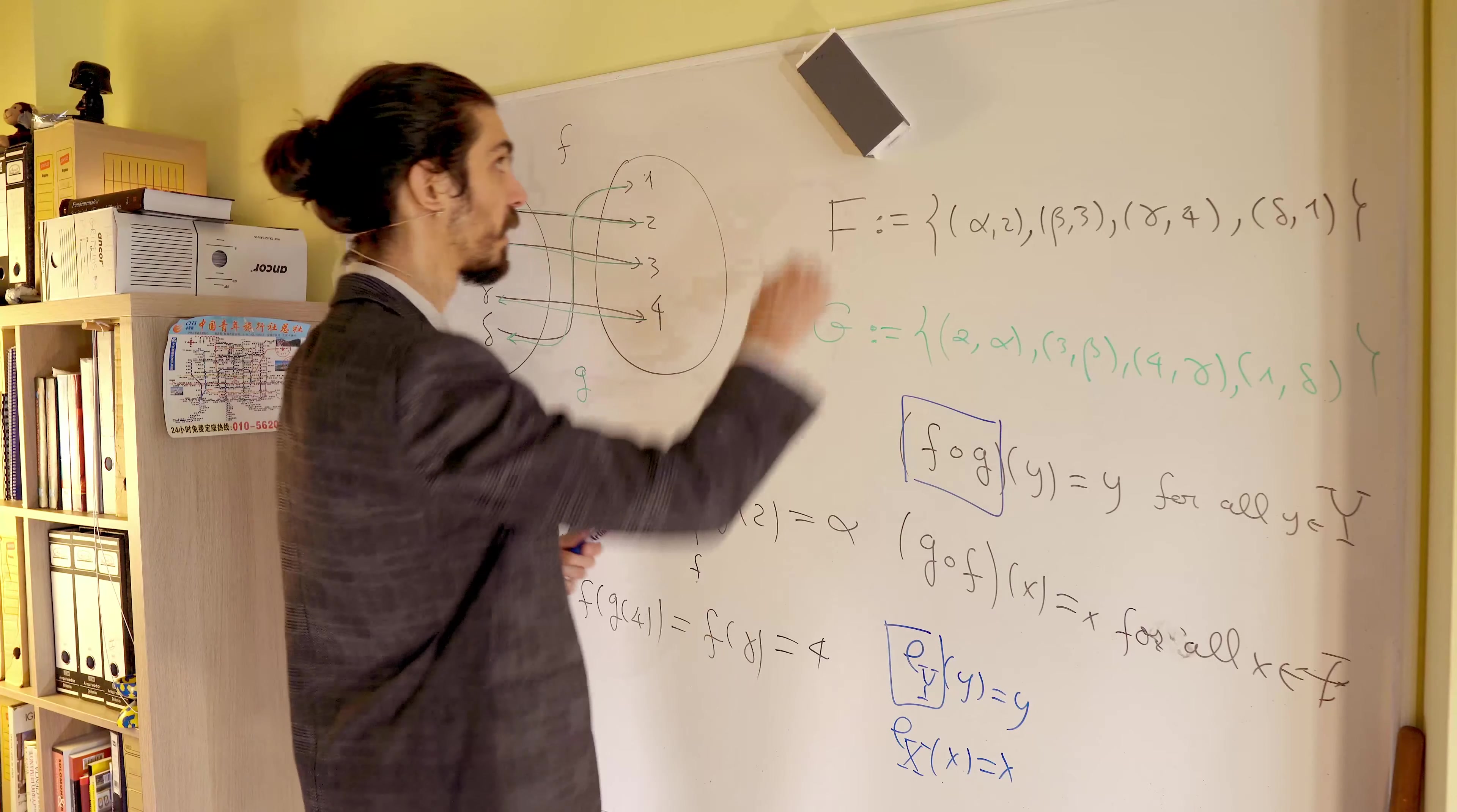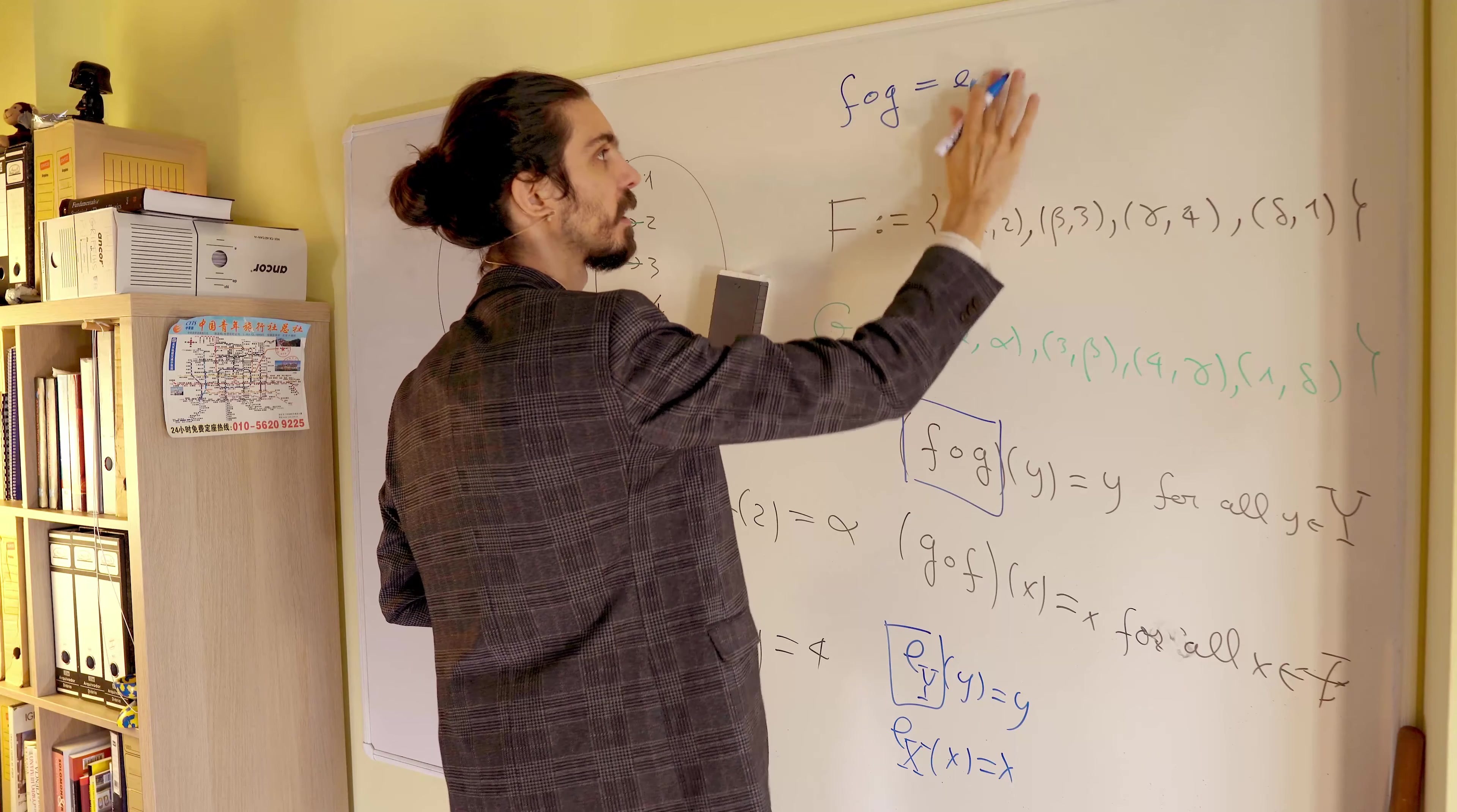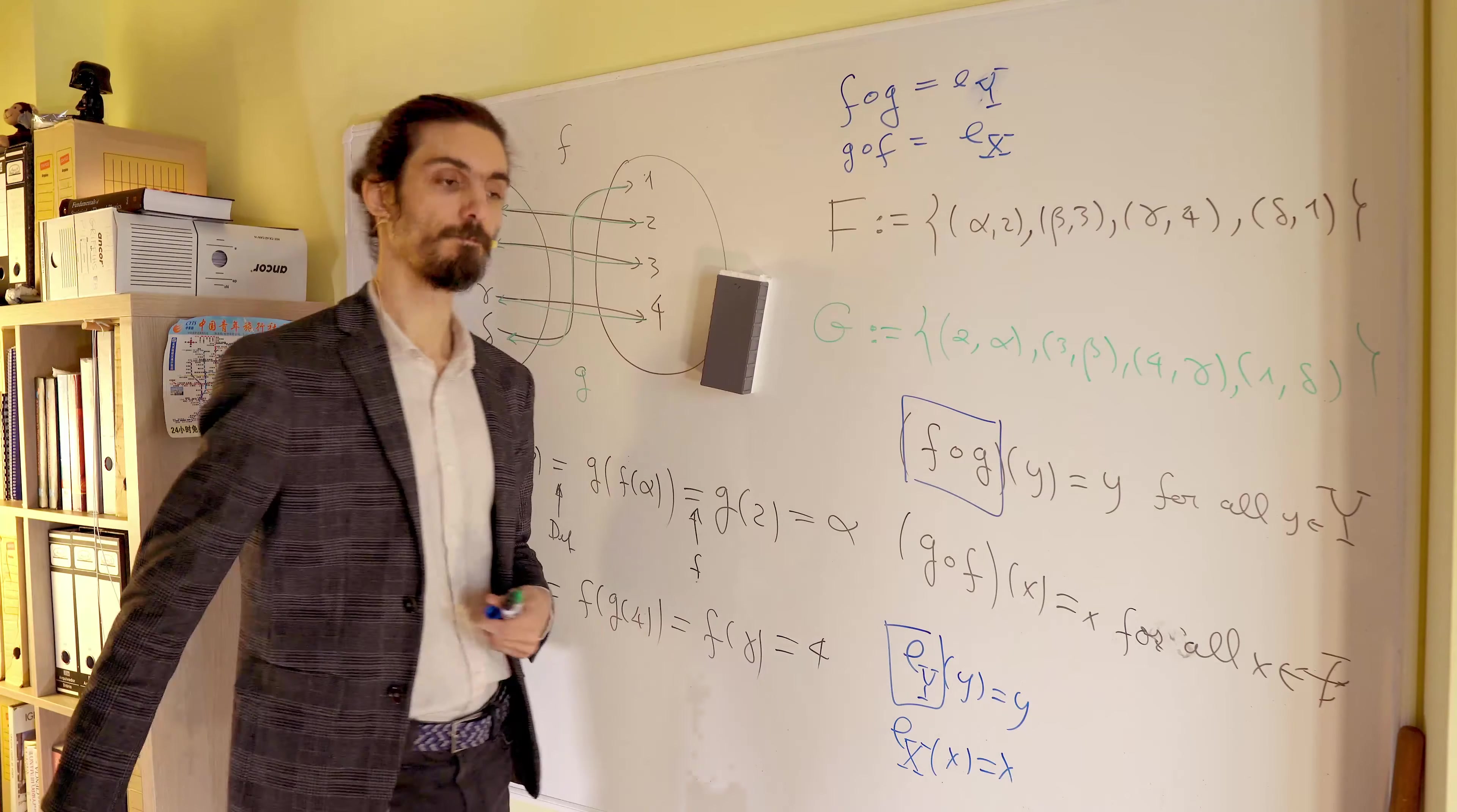Okay? So in general, let me write here, that f of g, in this particular case, must be the same thing as the identity function, not on x, but on y. Here, must be careful, on y. And g of f must be the identity on x. Is it okay?